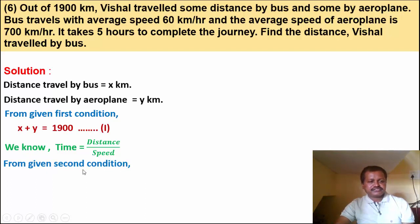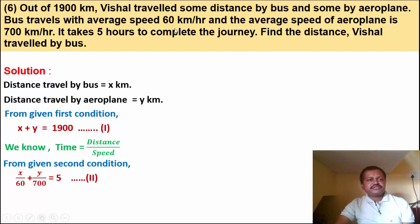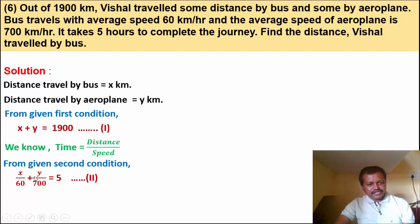From the second condition: time taken by bus is x upon 60, and time taken by aeroplane is y upon 700. Total time is 5 hours. So x upon 60 plus y upon 700 is equal to 5. This is equation number 2.